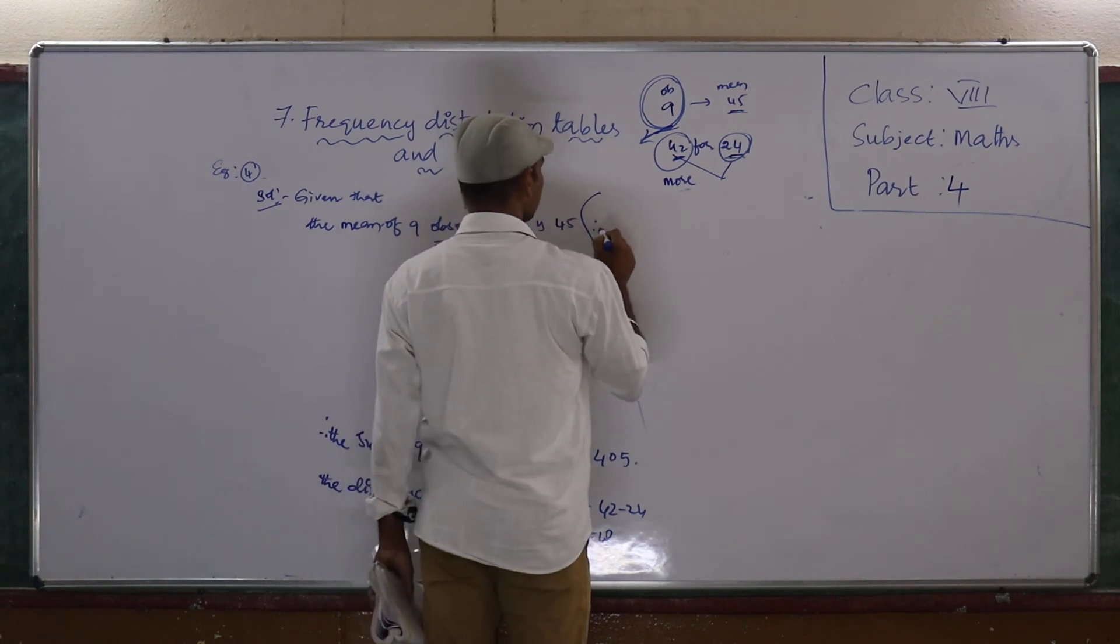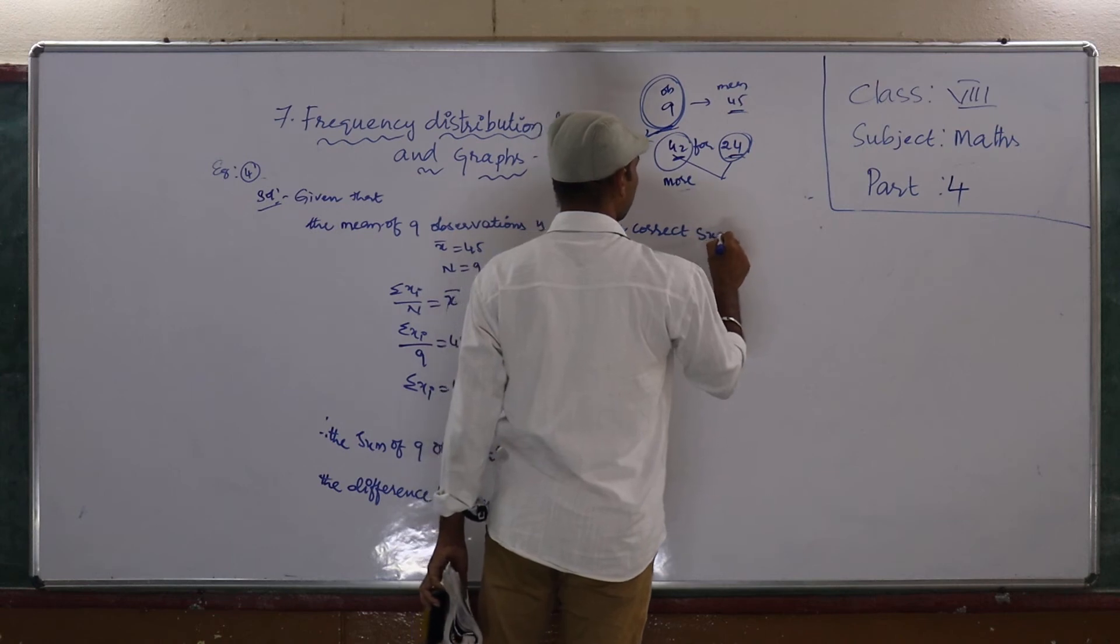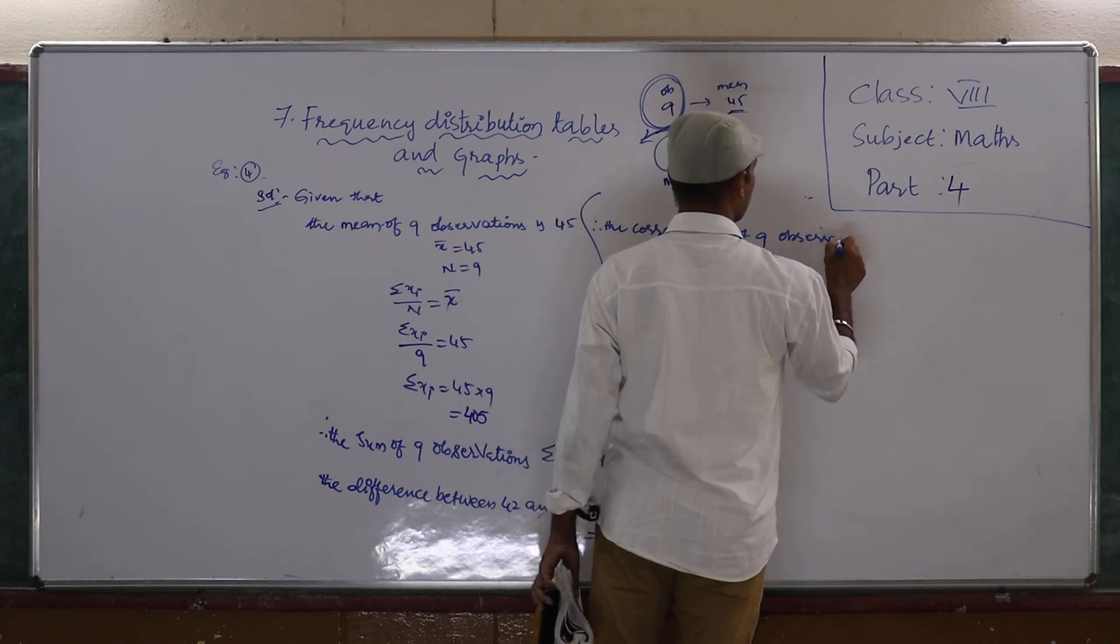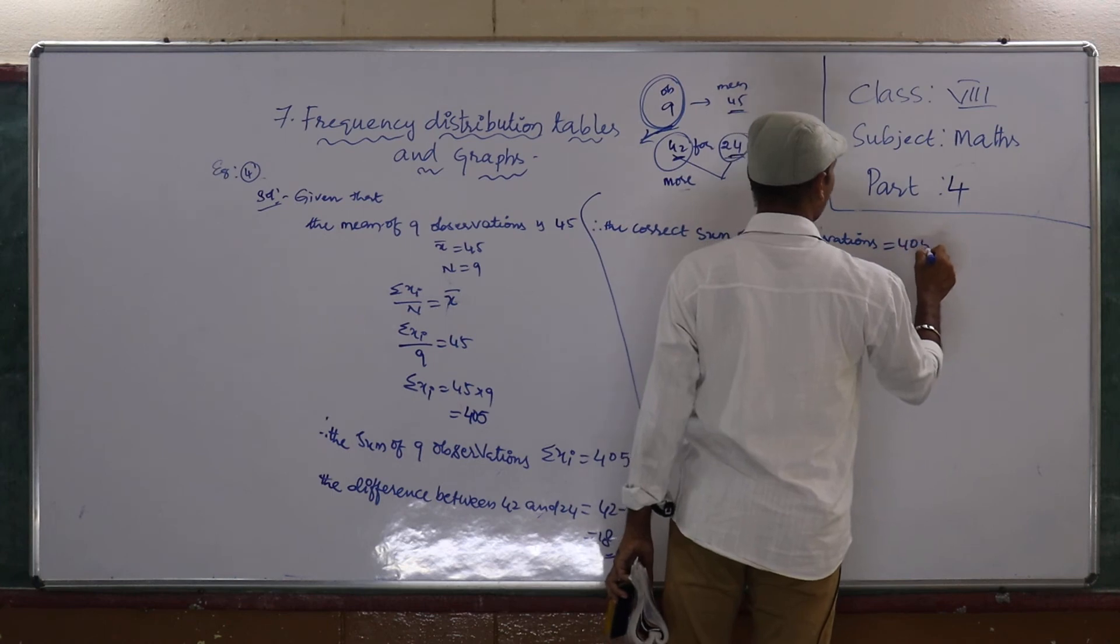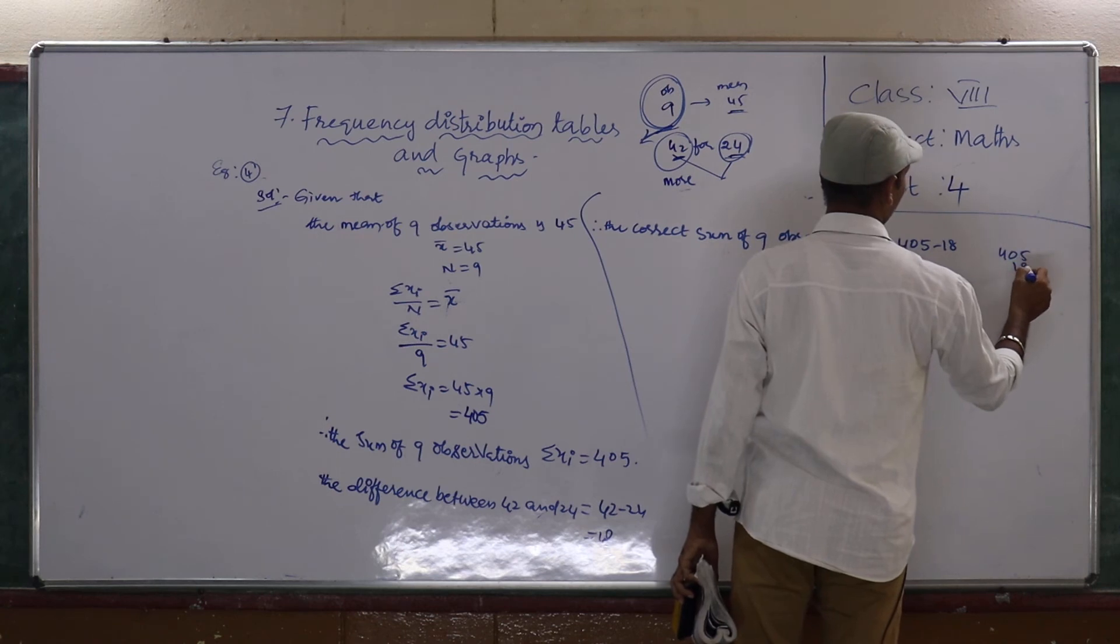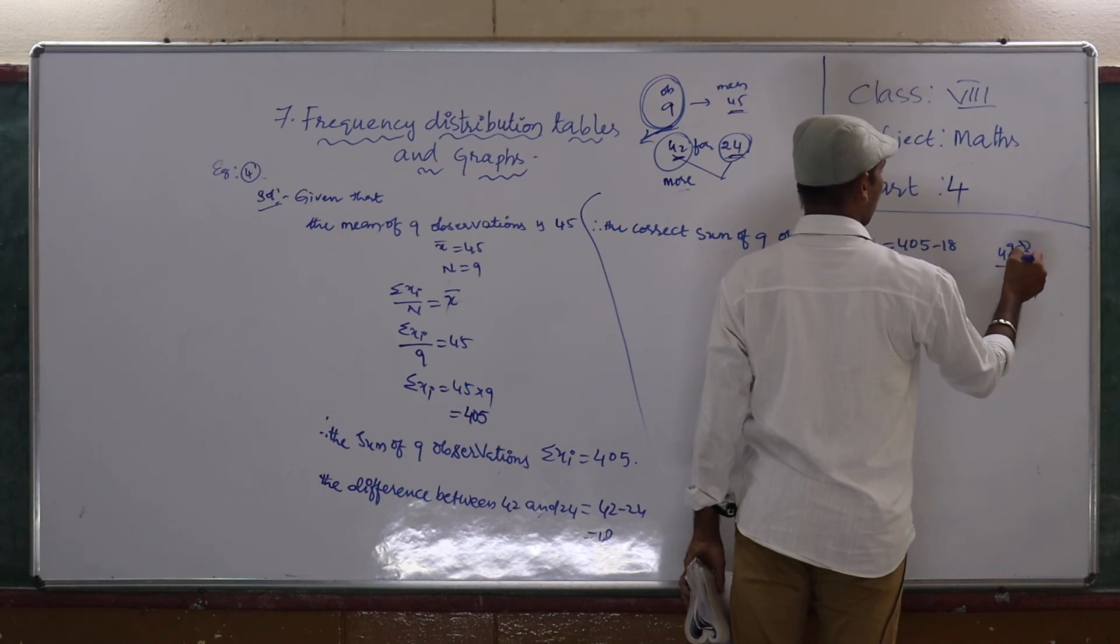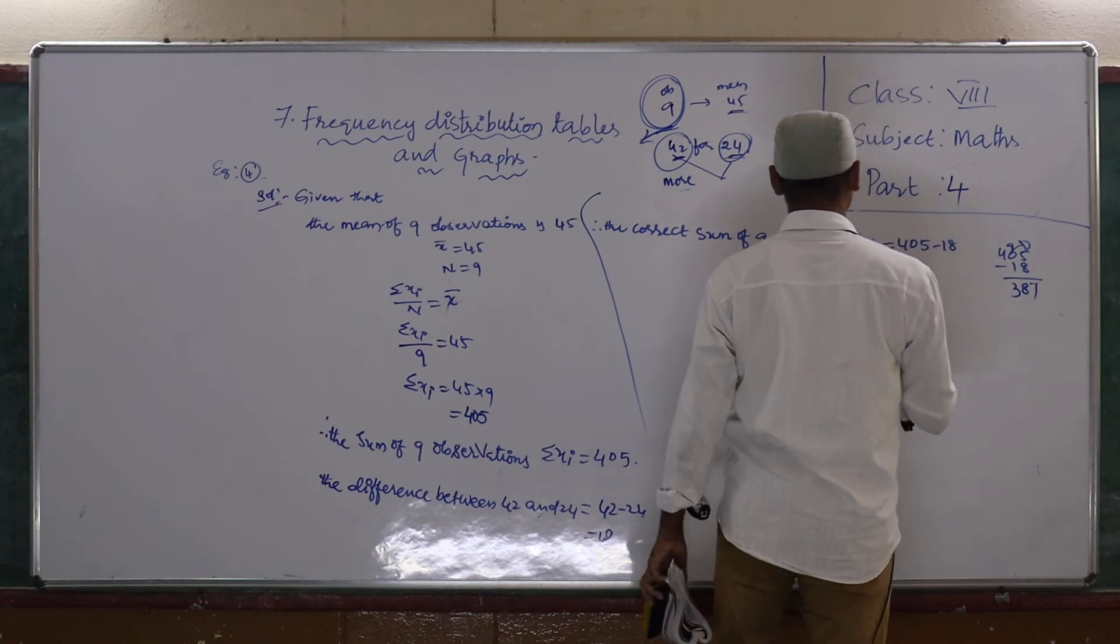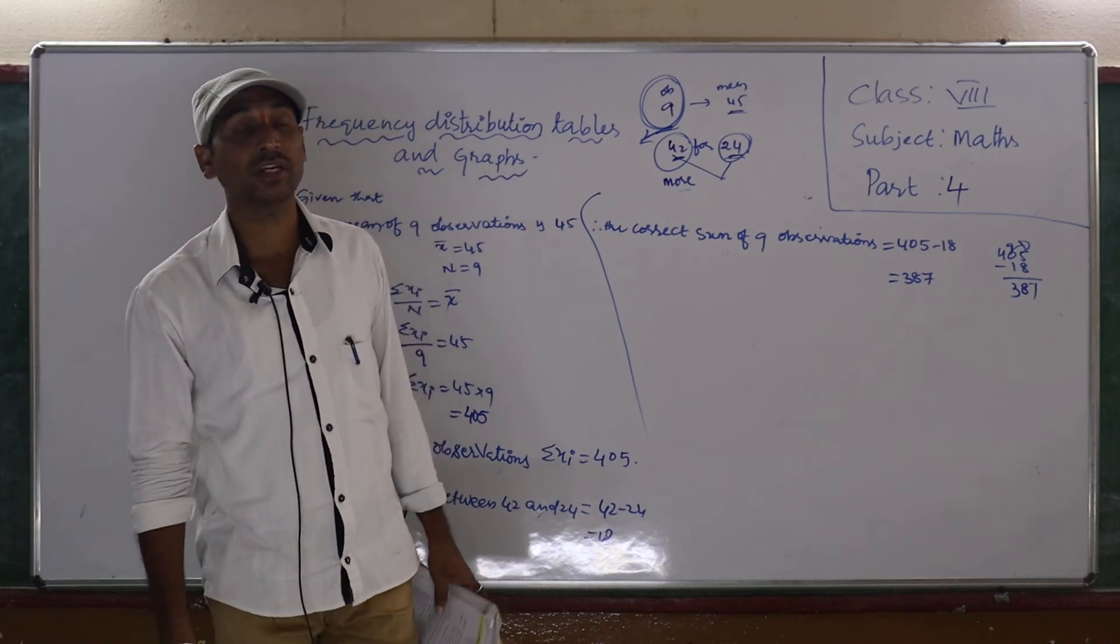So the correct sum of 9 observations, how much children? So 405 minus 18. Then how much we will get? 15 minus 8 is 7. Here 9 minus 1 is 8. Here 3. So 387. This is actually the correct sum of 9 observations.